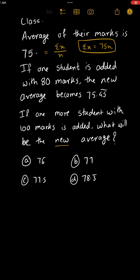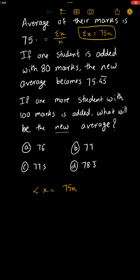We know the total of their marks is 75N, so summation X is 75N. If one student is added with 80 marks, their new total will be 75N plus 80, and the new number of students will be N plus 1. So the new average will be their new total upon new number of students: (75N + 80) / (N + 1).